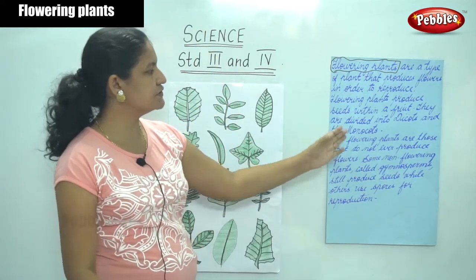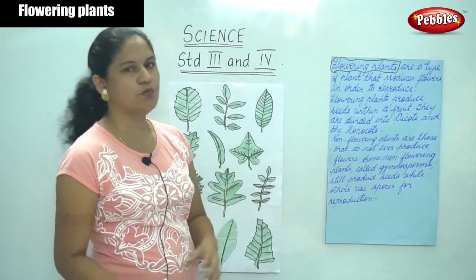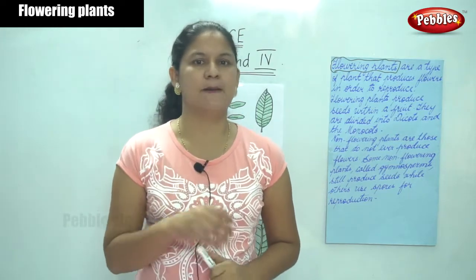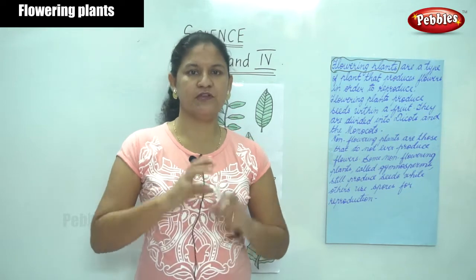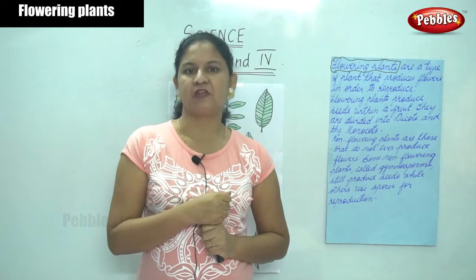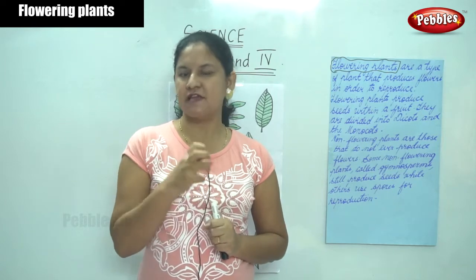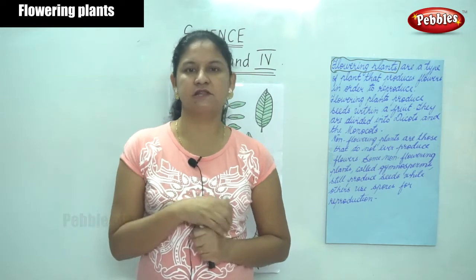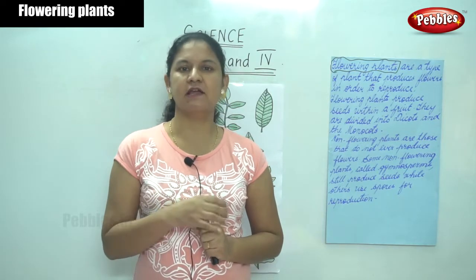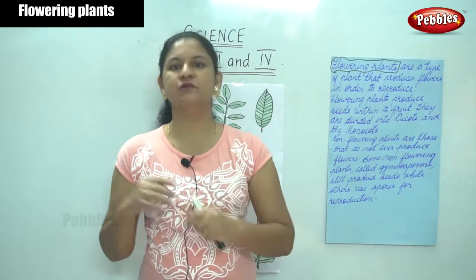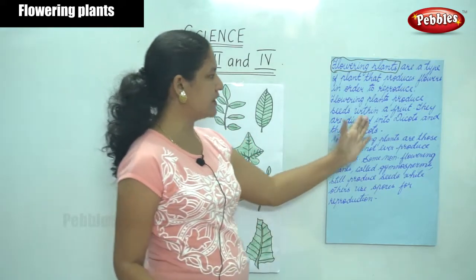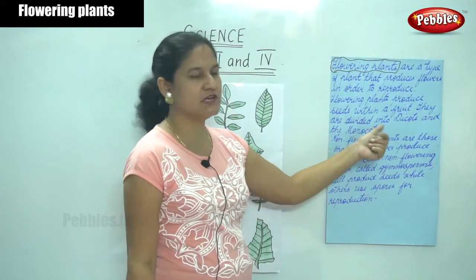Flowering plants produce seeds within a fruit. For example, if you take a mango, when you eat it you find a seed inside the fruit. You take that seed, plant it in the ground, and a new sapling comes out — a new tree starts growing. So flowering plants produce seeds within a fruit.